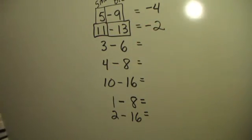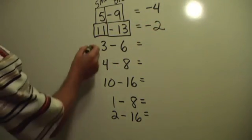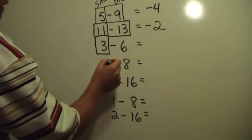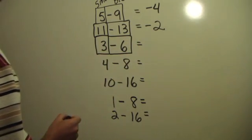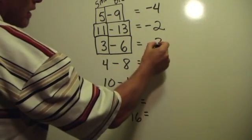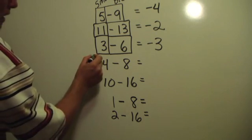Eleven and negative thirteen. A small number minus a larger number, negative two. Three and negative six, or three minus six equals negative three. A small number minus a larger number.